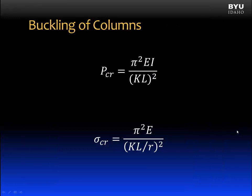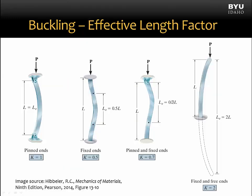To incorporate the influence of end conditions, the Euler equation for critical buckling load is modified to include this constant k. k is called the effective length factor and is used to modify the actual length of the member. Let's see how.